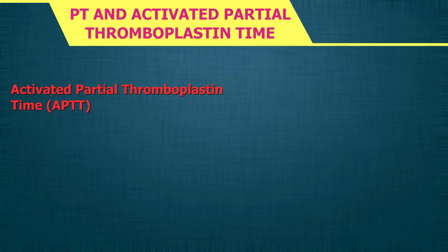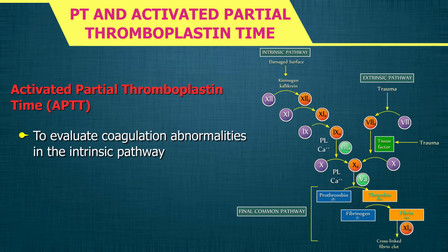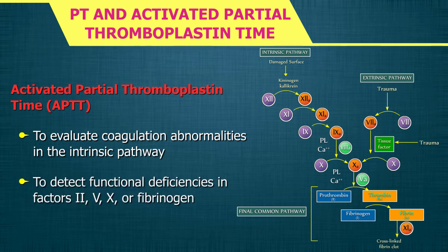Activated partial thromboplastin time (APTT) is used to evaluate coagulation abnormalities in the intrinsic pathway and also to detect severe functional deficiencies in factors 2, 5, 10, or fibrinogen.